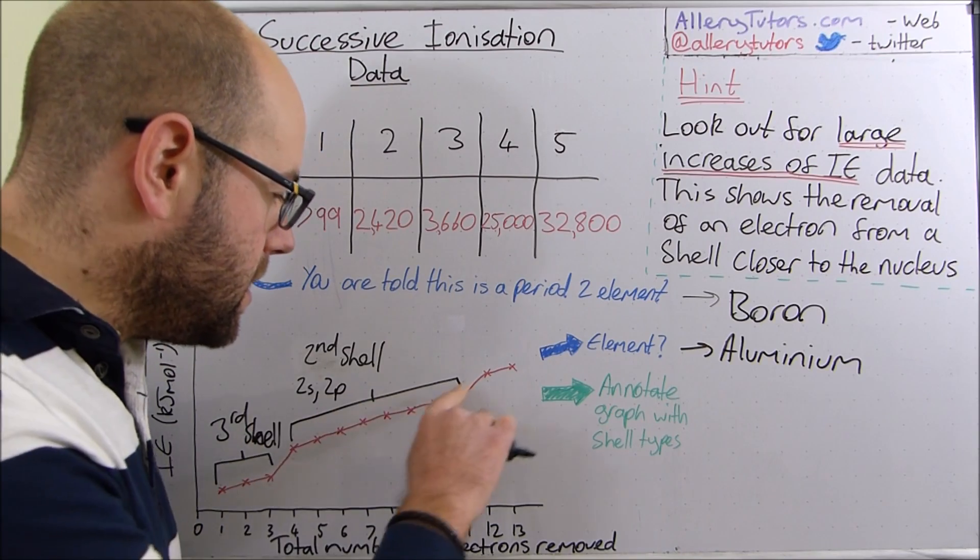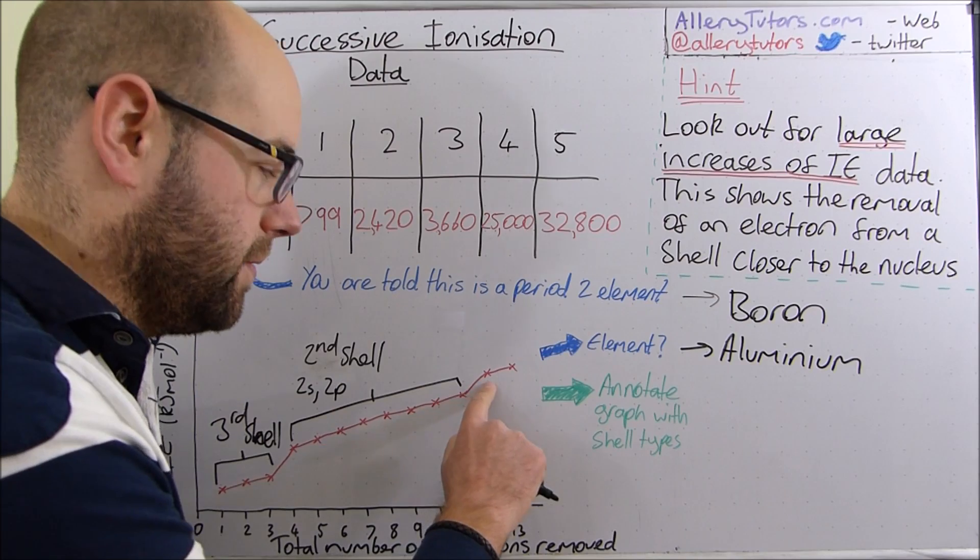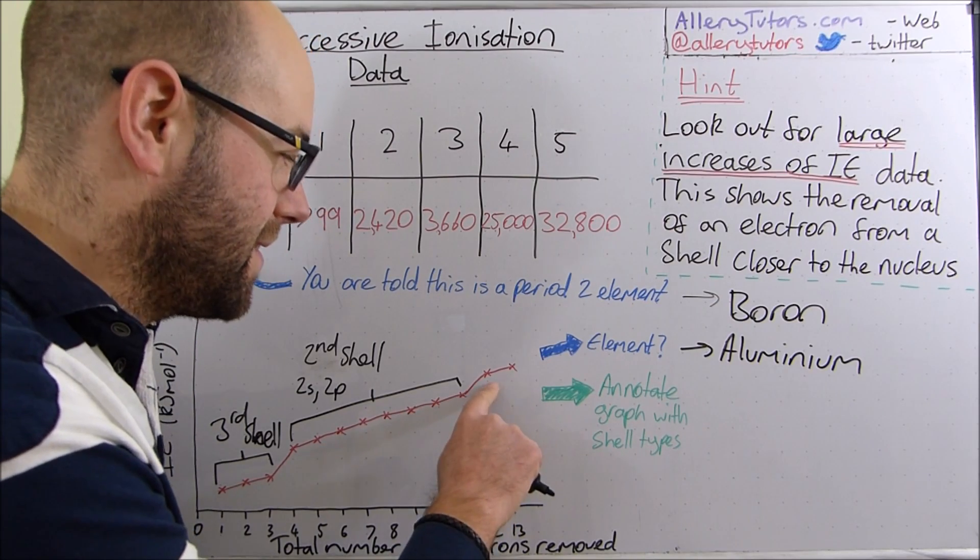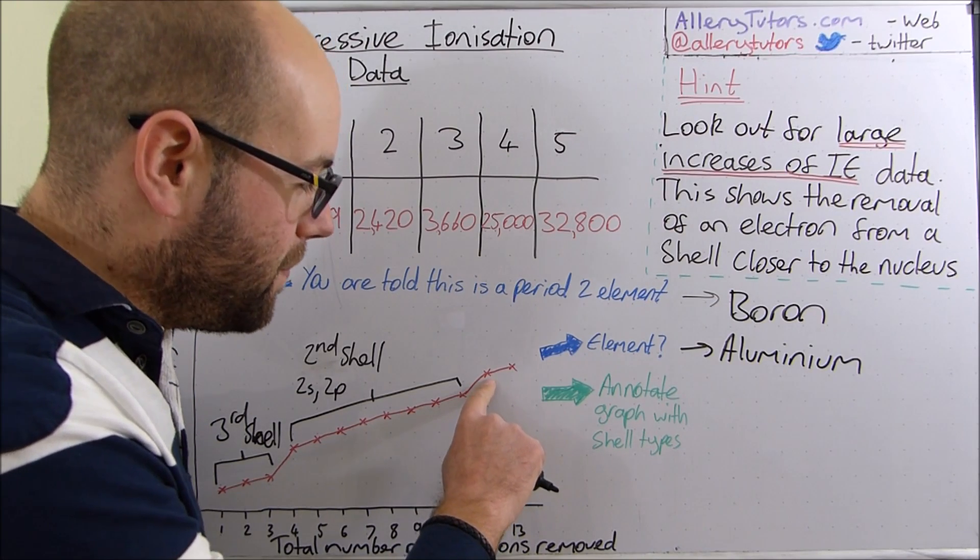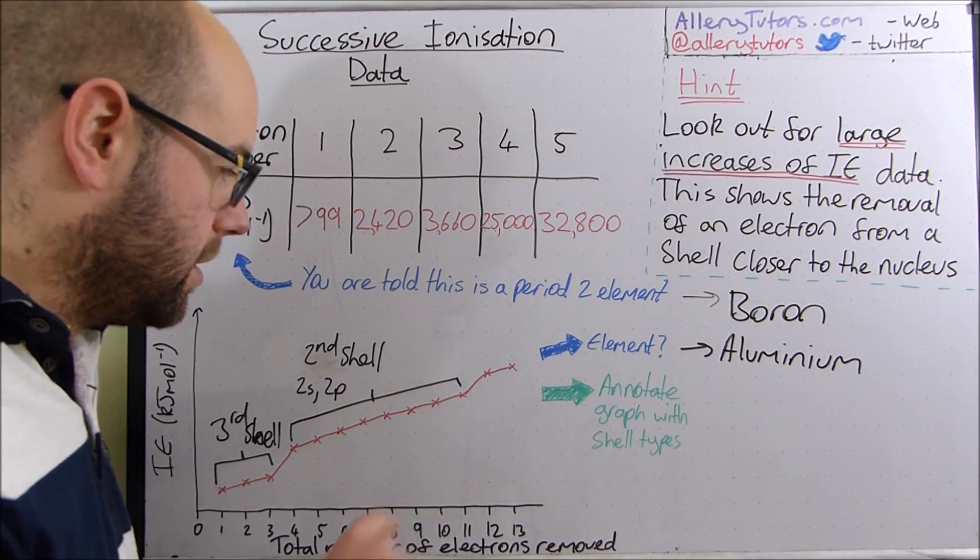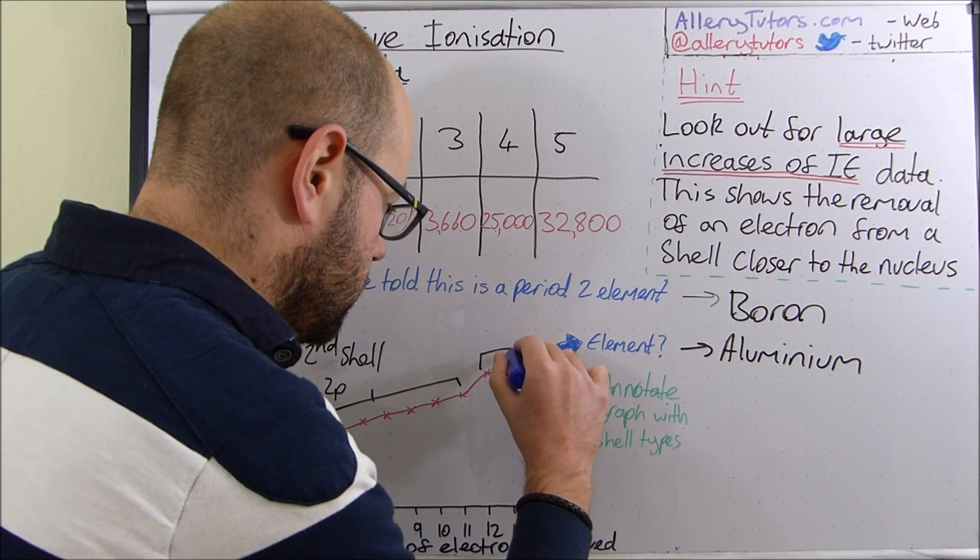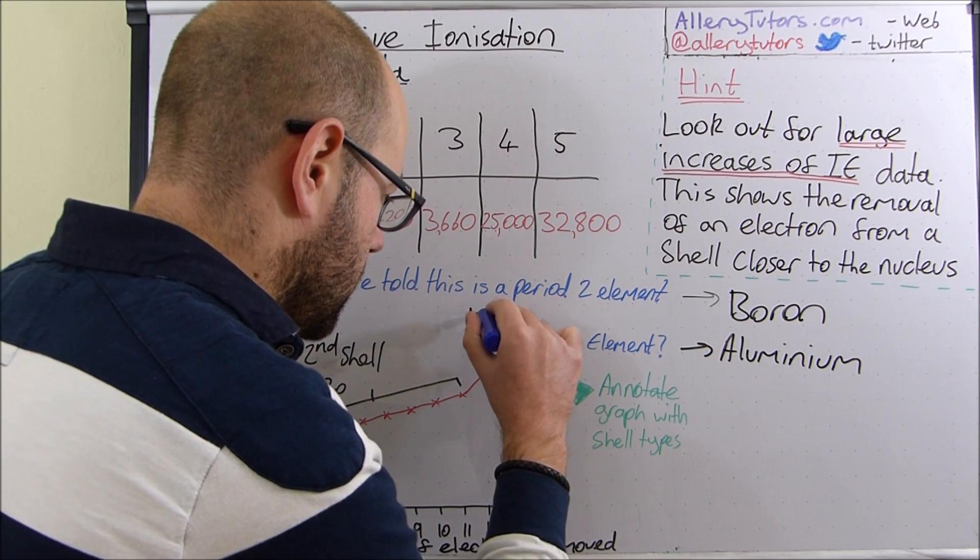And then when we get to this stage, we then keep on removing electrons. Remember, this is very theoretical. It's really difficult to remove electrons from something like this, especially all of them. Then we've got the last two here. Now, these two are the ones closest to the nucleus because they've got the highest ionization energy. So this is the first shell. These two are sitting in the first shell.